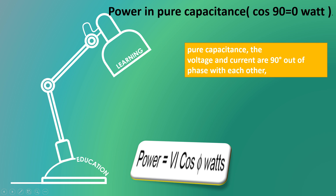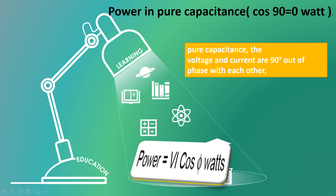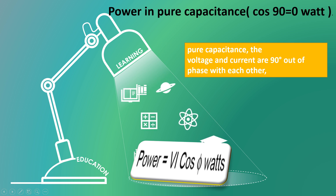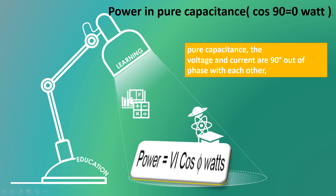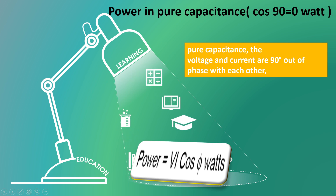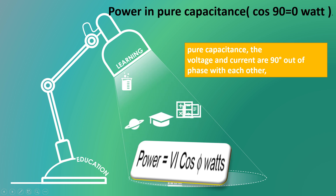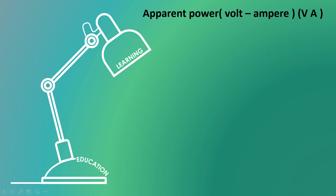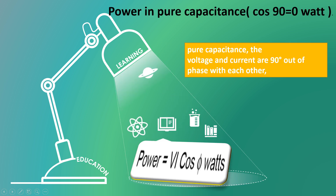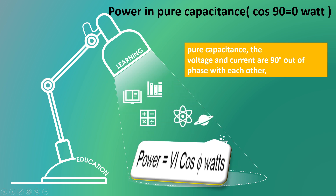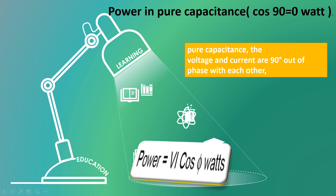Power in pure capacitance. The power in pure capacitance circuit is: power equals to V into I cos theta. Cos 90 degree equals to 0 Watt. Because in pure capacitance, the voltage and current are 90 degree out of phase with each other. Therefore, power in pure capacitance is 0 Watt. This is very very important.